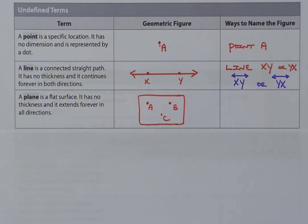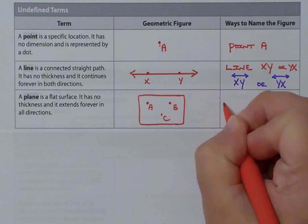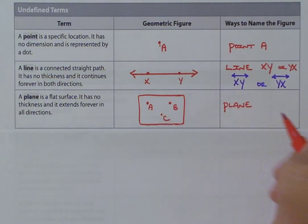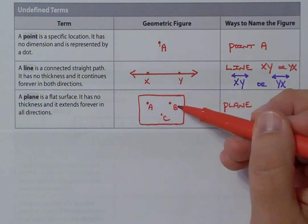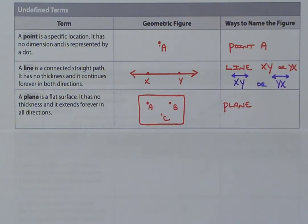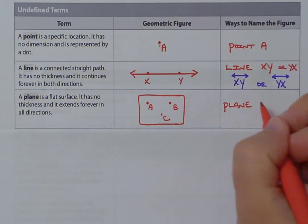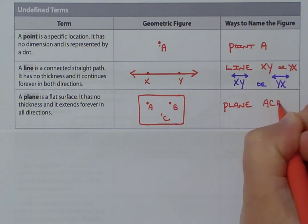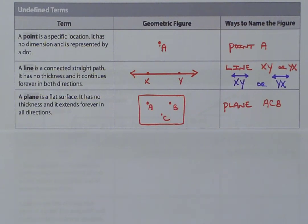So if we were to name the plane, we start with the name of the figure: 'plane.' A point requires one letter, a line requires two points, so a plane is going to require at least three points. You choose three points from that plane to give it a name — for example, plane ACB. Order does not matter: you could do ABC, BAC, or CAB. Unfortunately, unlike a line, there is no shorthand, so that is the only way we can name a plane.